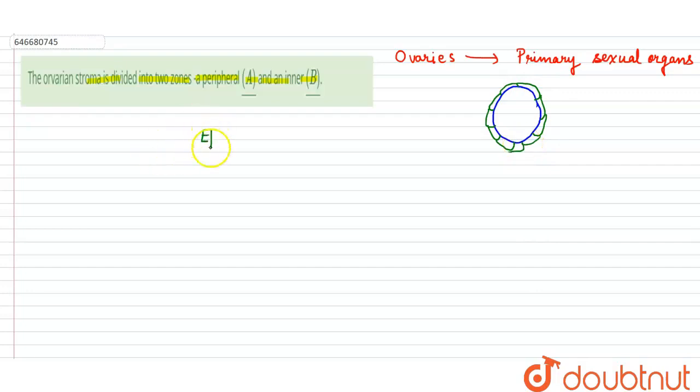Epithelial layer which encloses the ovarian stroma. Now this ovarian stroma is divided into two parts: the peripheral, peripheral cortex.